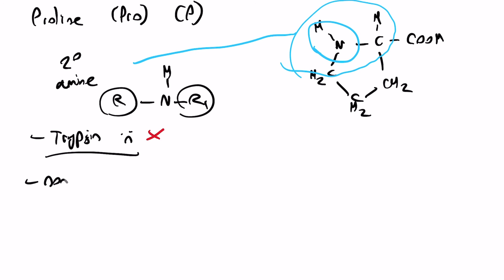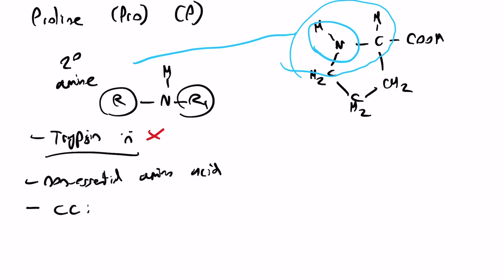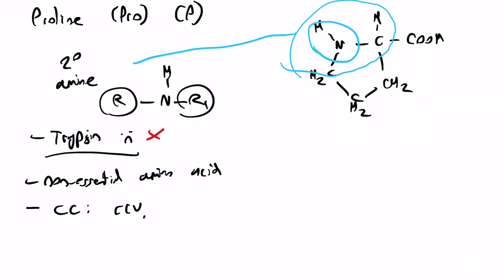And it's a non-essential amino acid. And its codons are the carbon copy codons. So we've got CCU, CCC, CCA, and CCG. And that's all I'm going to say about proline.